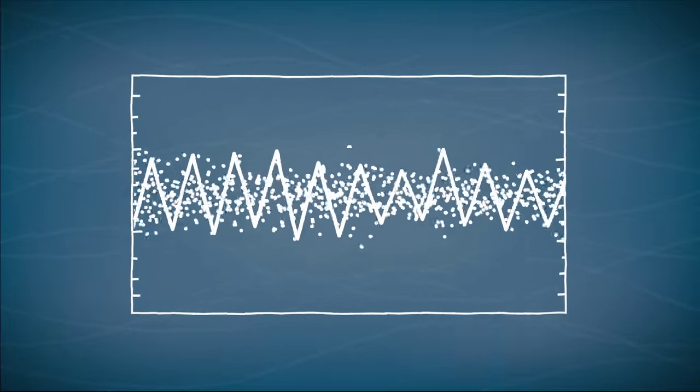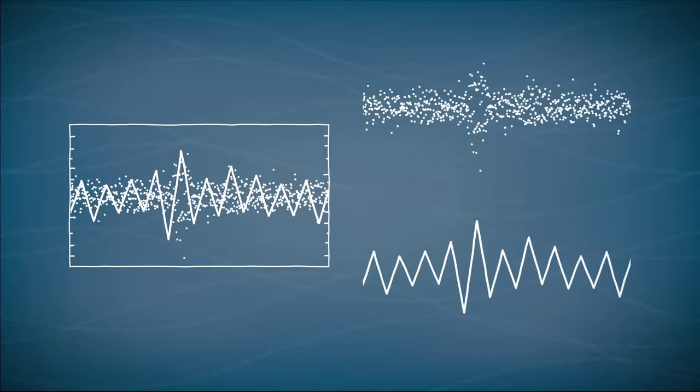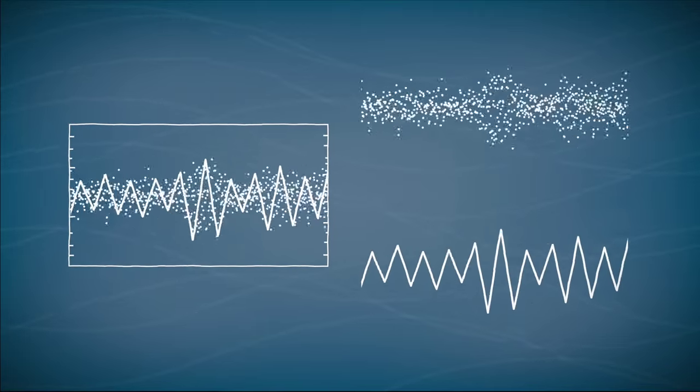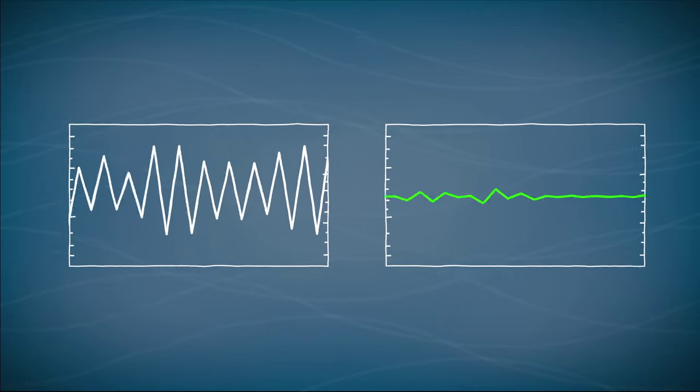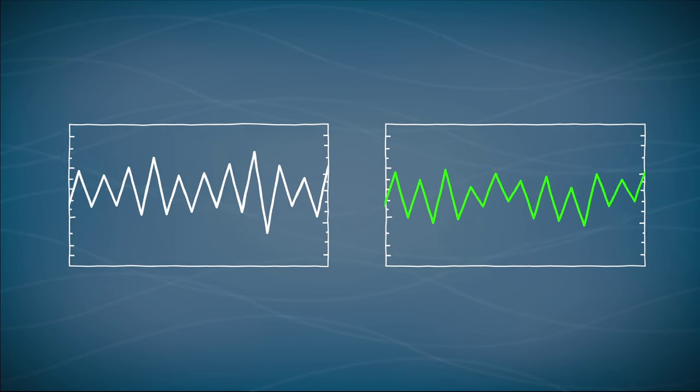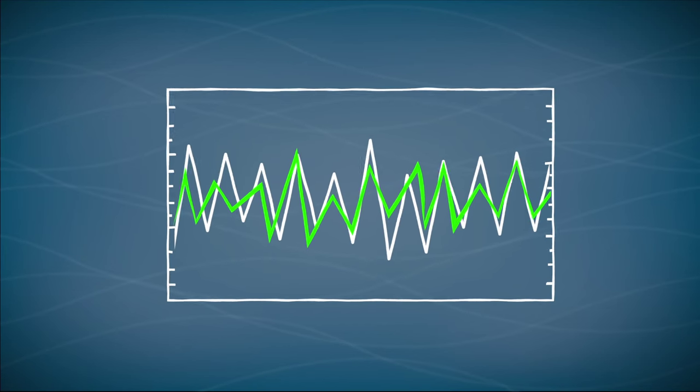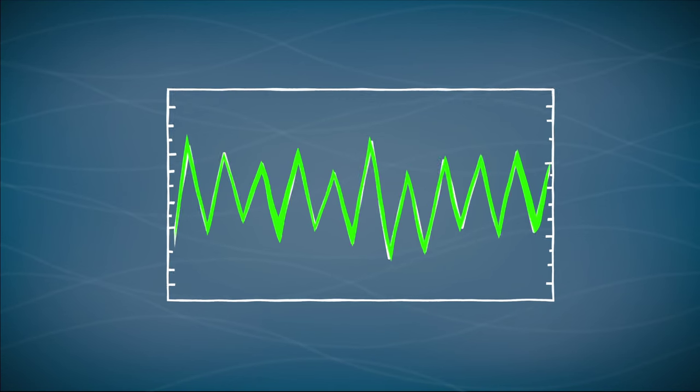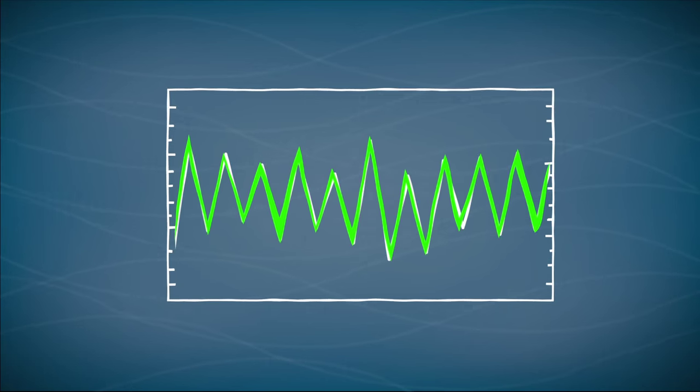So what role does signal processing and machine learning play in this program? It's really a two-step process. With the signal processing part, we're taking these audio signals — your speech — and analyzing it in such a way that we can figure out the important parts of the signal. Then the machine learning part is aligning those features every step in time. The coolest thing is being able to do things that have previously been impossible. It's a little bit like magic.